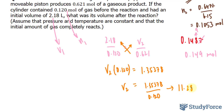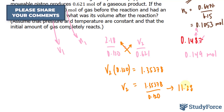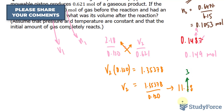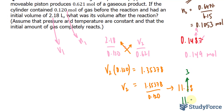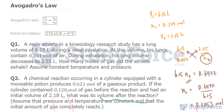11.28 — given that we need three significant figures and the first discarded digit is 8, which is greater than 5, this becomes a 3. So 11.3 liters is the volume after the reaction. And there you have it — that is how to use Avogadro's Law to solve chemical problems involving volume and moles.